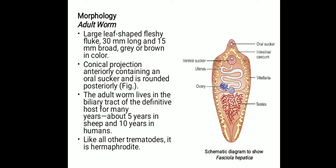It has a conical projection anteriorly containing an oral sucker and is rounded posteriorly. The adult worm lives in the biliary tract of the definitive host for many years — up to around five years in sheep and ten years in humans. Like other trematodes, this parasite is also hermaphrodite.